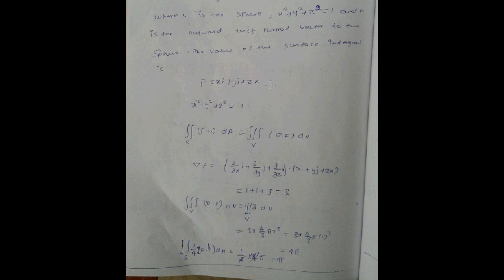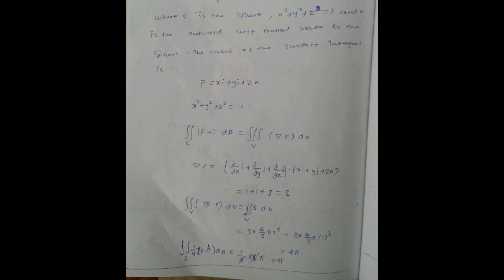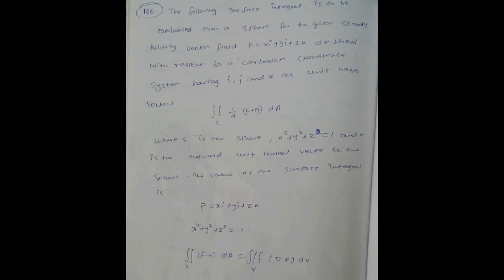So 4 pi over 3 times r cubed. r means x square plus y square plus z square equal to 1, so this is r. Substitute r equal to 1. 3 and 3 cancel into 4 pi.